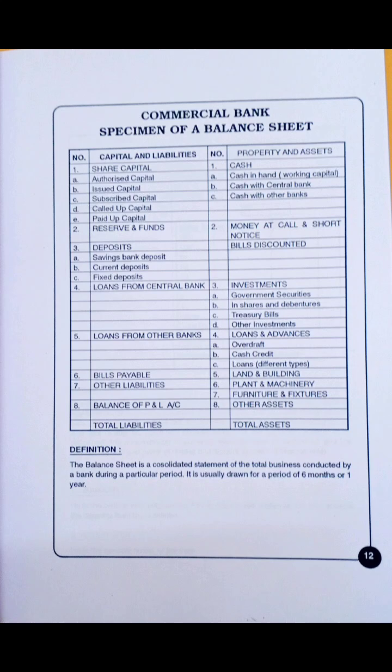On the properties and assets side — right-hand side: cash in hand, cash with the central bank, then investments including government securities, loans and advances, overdraft, cash credit, plant and machinery, furniture, and other fixed assets. You have studied this in accounts so it is simple. If it appears in the exam by chance you can score well. After drawing the specimen write the definition: the balance sheet is a consolidated statement of the total business conducted by the bank during a particular period, usually drawn up for 6 months or 1 year.